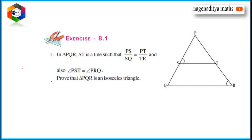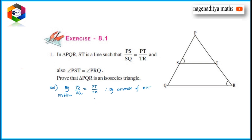Solution: Given PS by SQ is equal to PT by TR. In triangle PQR, two sides are divided in the same ratio by line ST. Therefore, by the Converse of Basic Proportionality Theorem, ST is parallel to QR.